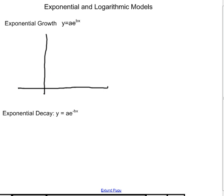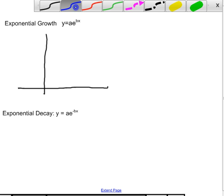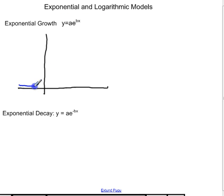In this screencast I'm going to talk about exponential and logarithmic models. The first one is a familiar one based on the activity we just did with the beans, and that's exponential growth. It starts out slowly and then grows very rapidly. It has a horizontal asymptote on the x-axis and it passes through the point (0,1).